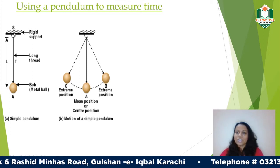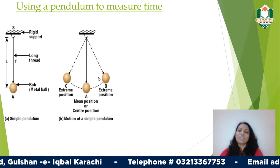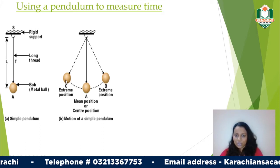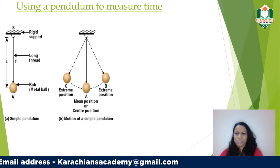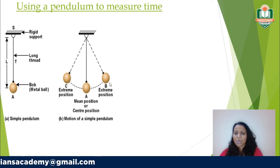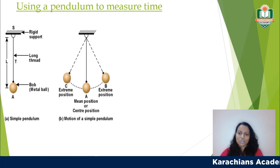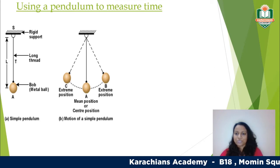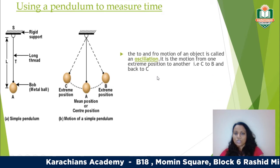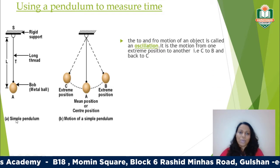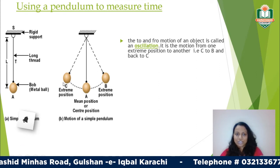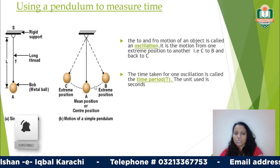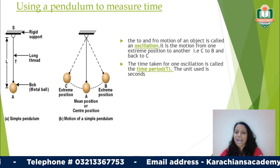The length of the pendulum is measured from the fixed support to the center of the metal ball, and varying the length will vary the time it takes. Starting from the extreme position C, the pendulum swings all the way to point B and comes back to point C continuously, with A being the central resting position. This complete back-and-forth movement from C to B and back to C is known as one oscillation.